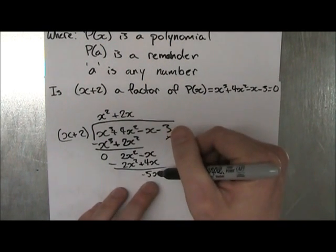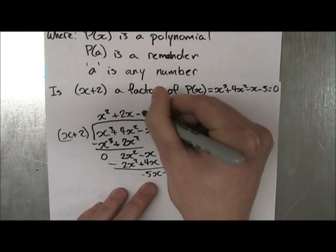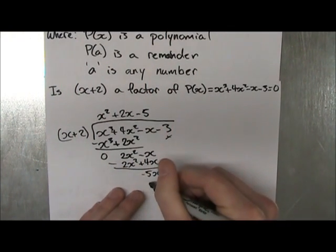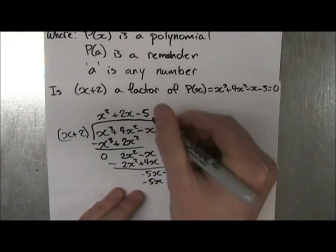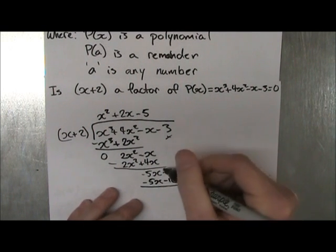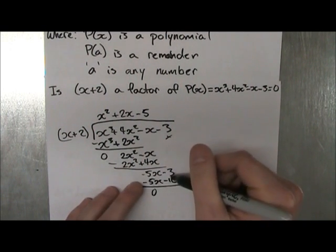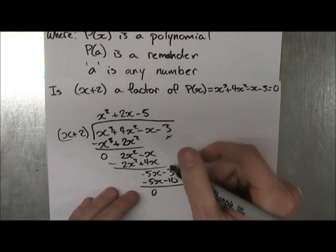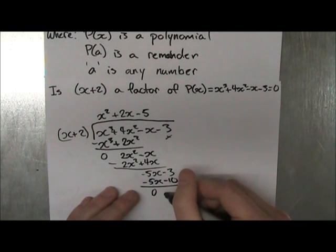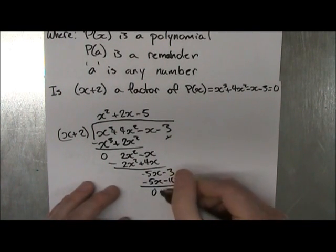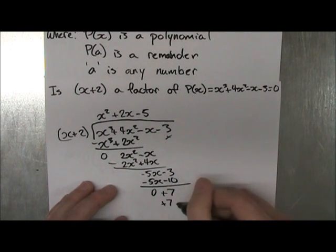What times x is equal to minus 5x? That's minus 5, minus 5x, minus 10. And then you get 0, and you get minus minus 10, that's plus 10. So you get plus 7. Plus 7 is equal to your remainder.